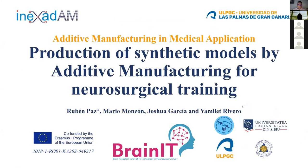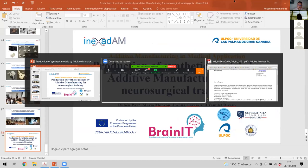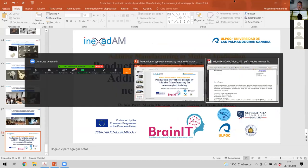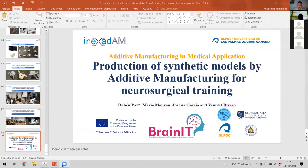Thank you, Ruben, for a very interesting presentation. There is one suggestion: after your first case, where perhaps the brain is too stiff, you could try mixing silicone with ultrasound gel composed of a mix of polypropylene glycol and water. This is a key suggestion for how to further decrease the stiffness of the material.